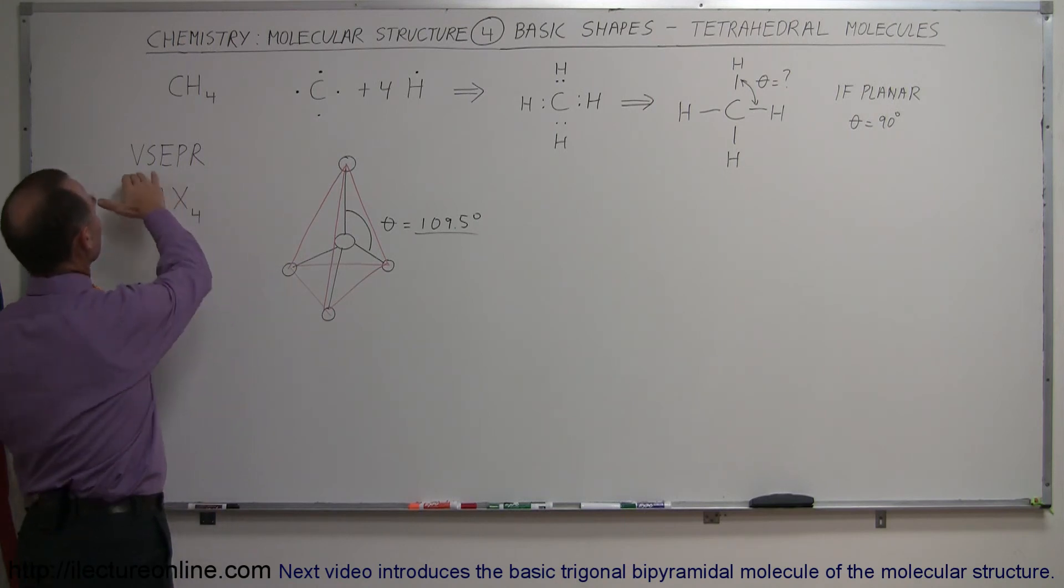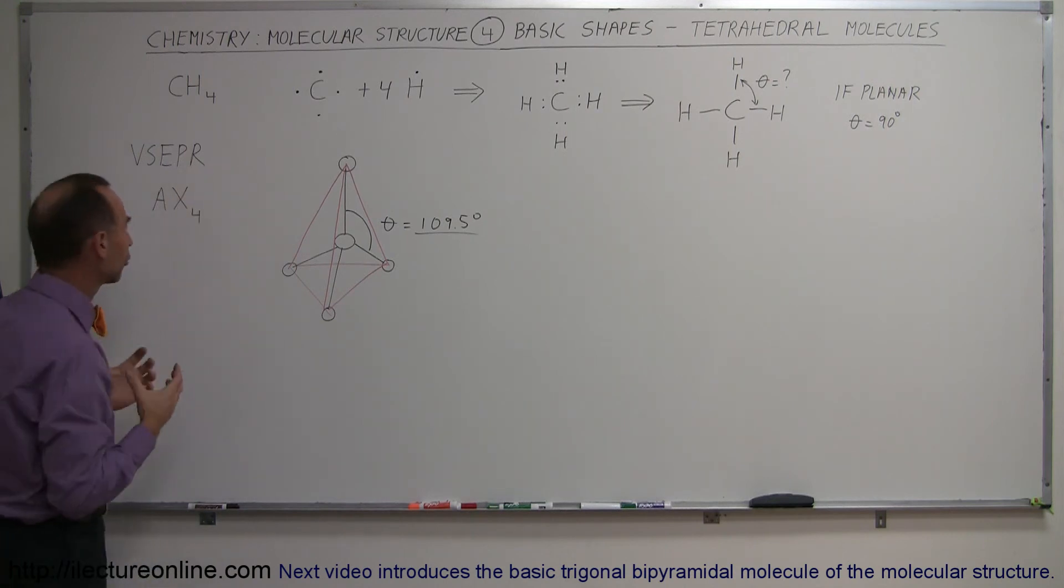Now, on the VSEPR notation—remember that was the valence-shell electron pair repulsion concept of how molecules are formed—we have one central atom and we have four terminal atoms, so that's where we end up with the methane molecule.